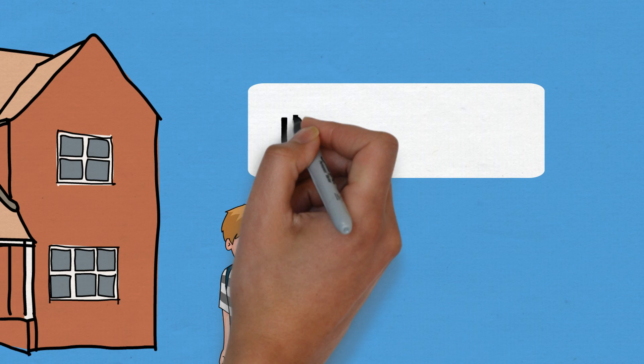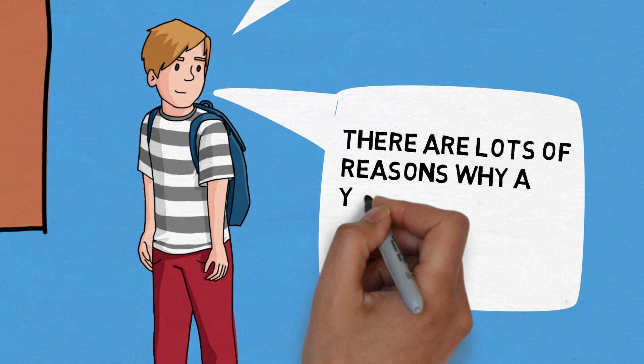I'm in care, which means I'm cared for by people who are not members of my birth family. There are lots of reasons why a young person like me can end up in care. Here are a few examples.